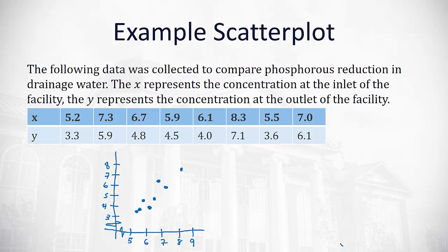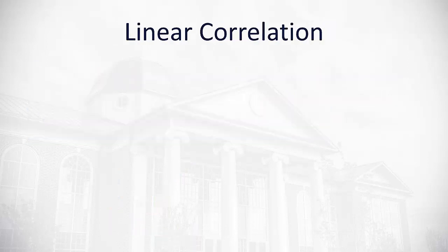And so, we end up with this trend of dots that shows the relationship between how the concentration at outlet depends on the concentration at inlet. And what you might start to notice is they do tend to trend in the same direction. We can almost draw a straight line through this data.